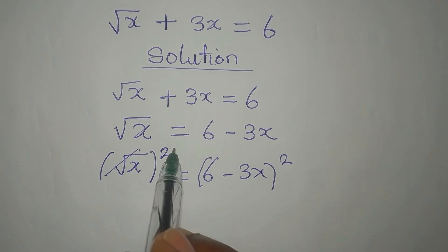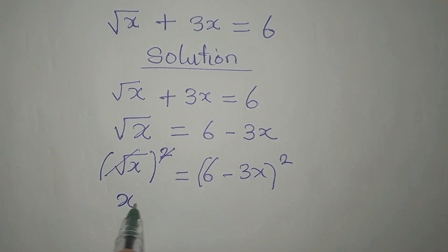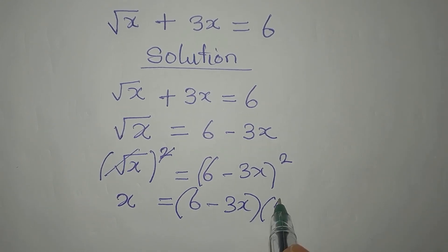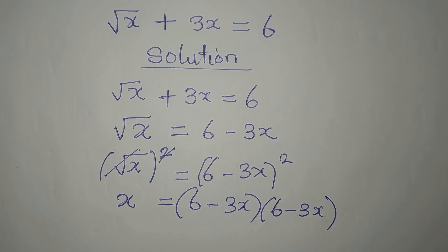This is going to take this out. x will now be equal to 6 minus 3x in two places. 6 minus 3x in two places.